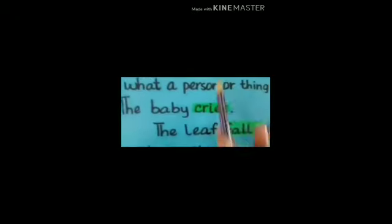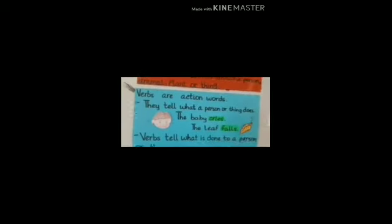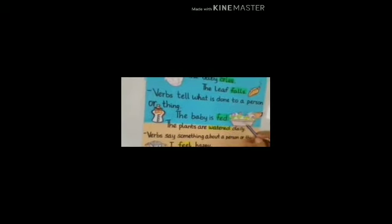Verbs tell what a person or thing does. The baby cries — what is the person doing? The baby cries. The leaf falls — leaf is a thing; what is happening with the leaf? It falls. Verb also tells what is done to a person or thing. The baby is fit — baby is a person; what is happening with the baby? The baby is fit. The plants are watered daily — plants are a thing; they are watered daily.